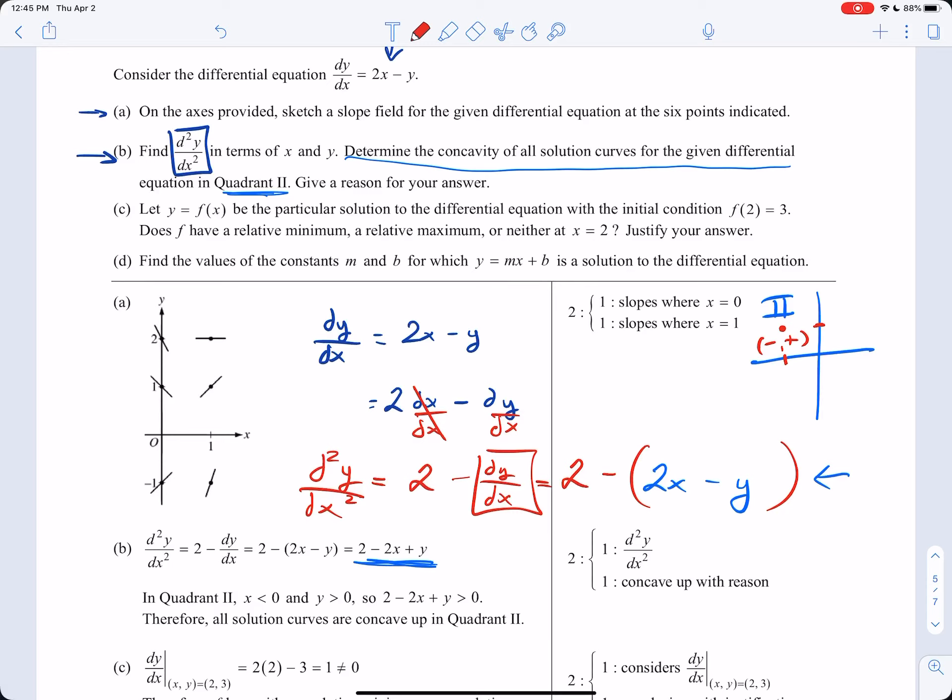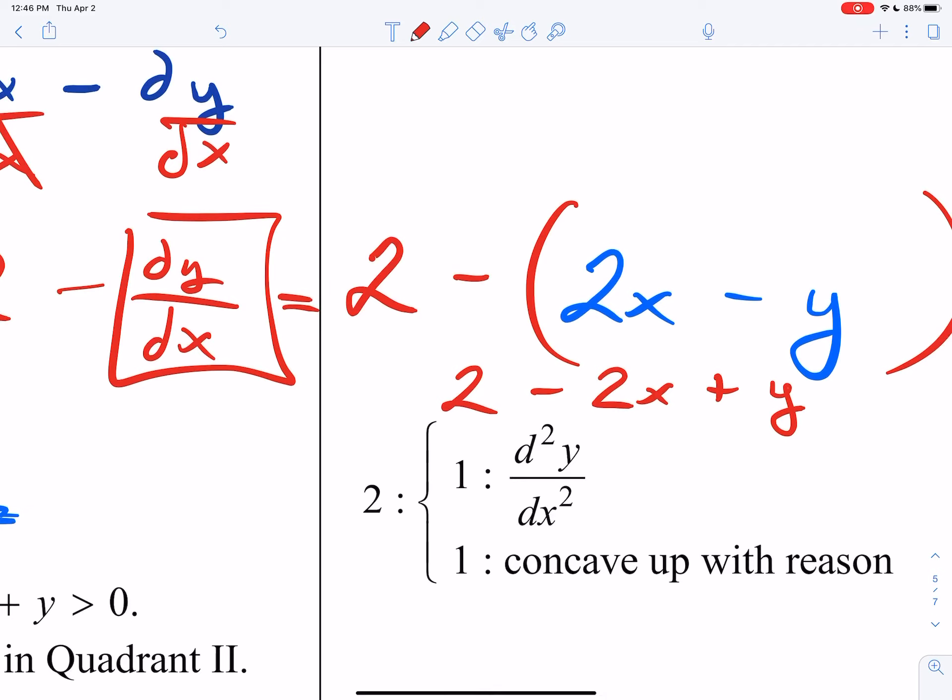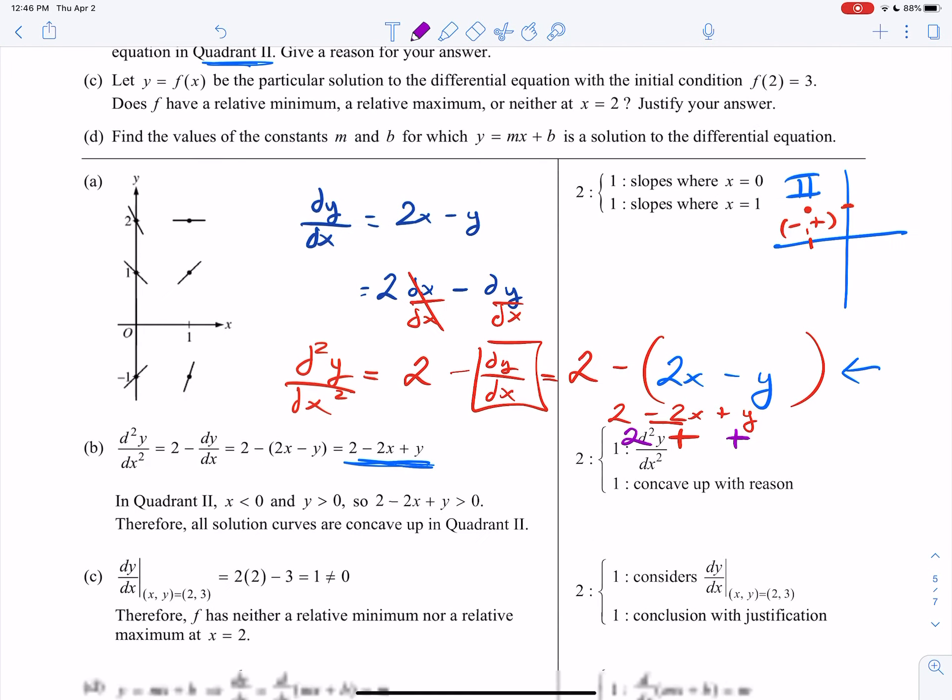So if I distribute this here, I would get 2 minus 2x plus y. If you know that x is negative, then that negative number times this negative 2 will give you something positive. You know that the 2 already here in the front is positive, and the y coordinate is also going to be something positive. So you know no matter what, any point in the second quadrant will give me something that comes out positive. So that means the second derivative will always be positive. So what does it mean when the second derivative is positive? It tells you that the functions will always be concave up, which is where they came up with that solution there.